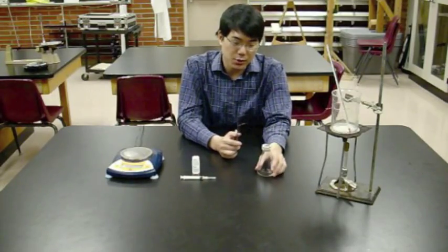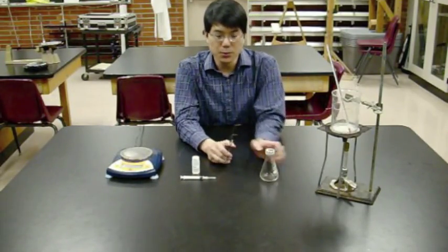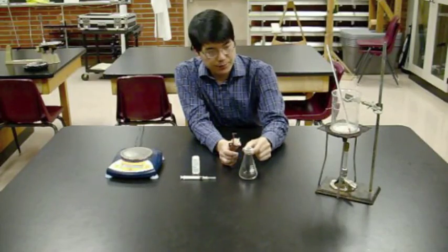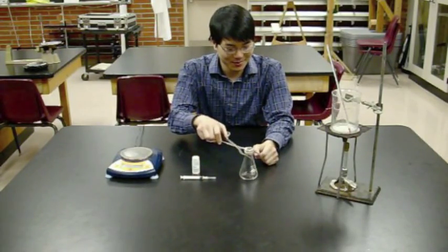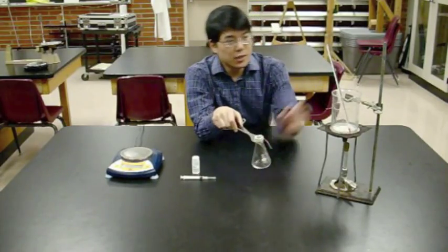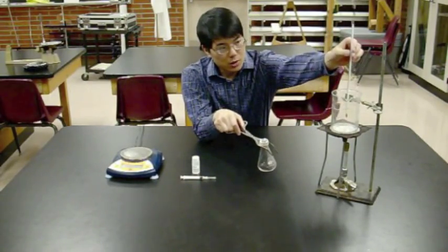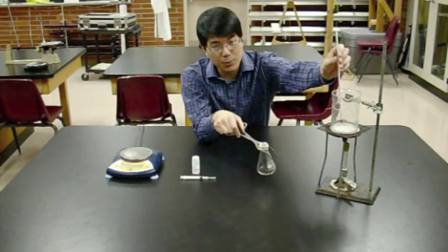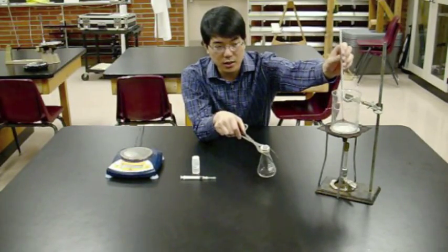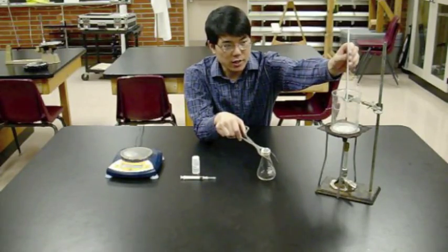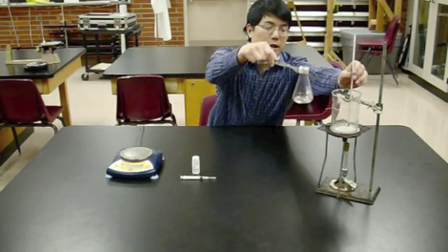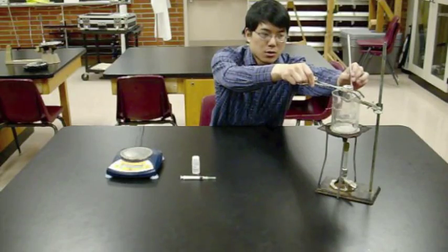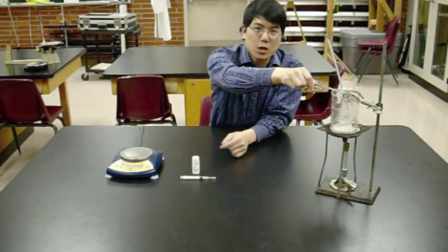Hold the Dumas tube with long forceps. Before you put it in the water bath, take a temperature measurement. Read your thermometer, making sure the end is not in direct contact with the bottom of the flask but is in the water. Take a temperature measurement, then put your Dumas tube into the beaker.